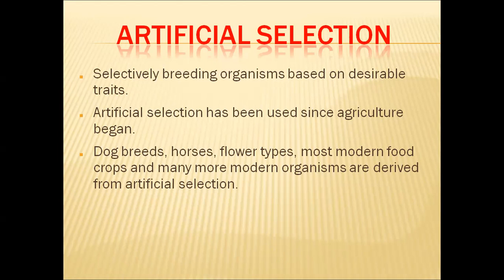In natural selection, organisms are subjected to several types of tests by nature. Those organisms which have the qualities to sustain in those tests will survive, while the remaining organisms will die. The surviving organisms are selected by nature — they are naturally selected.